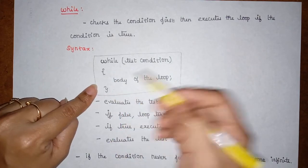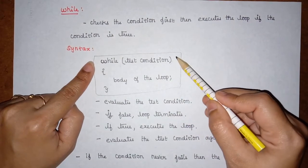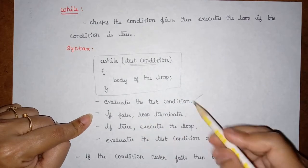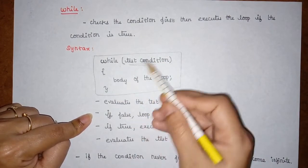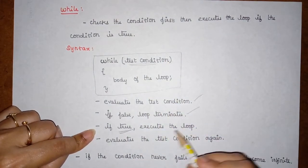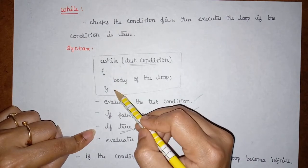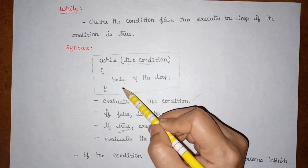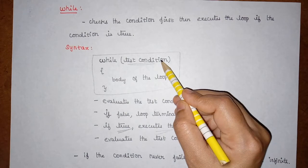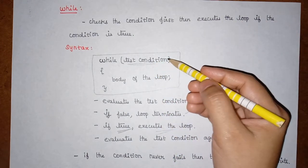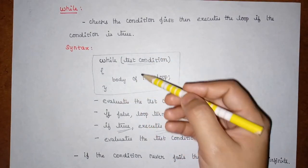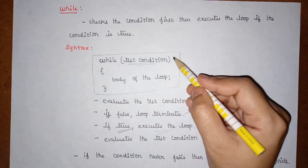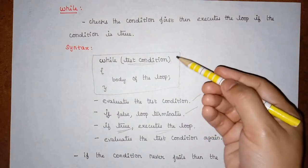The steps involved in the while loop are: first, evaluate the test condition. If the test condition is false, the loop terminates without entering. If the test condition is true, the statements inside the body of the loop get executed. After executing the body, the test condition is evaluated again, deciding whether to execute the body or terminate. This continues until the condition becomes false.